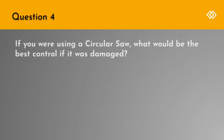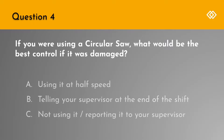Question 4. If you were using a circular saw, what would be the best control if it was damaged? A. Using it at half speed. B. Telling your supervisor at the end of the shift. Or C. Not using it and reporting it to your supervisor.